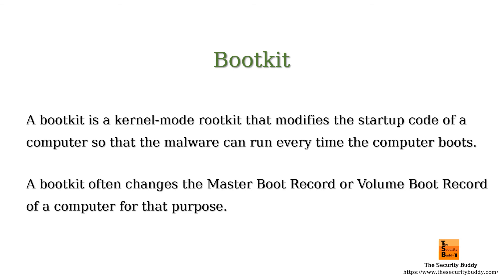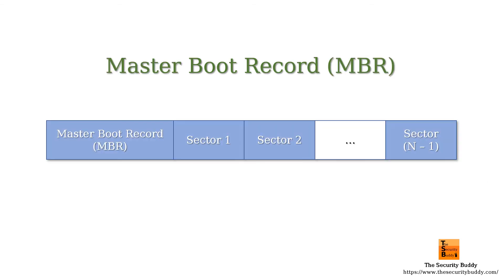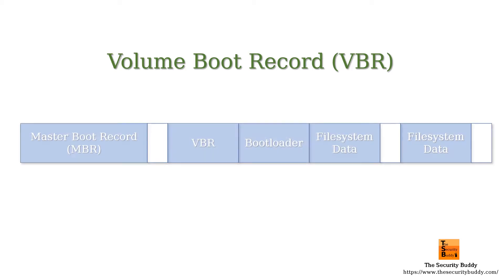A master boot record, or MBR, is a particular type of boot sector that holds information on how the logical partitions are organized on the system. A volume boot record, or VBR, is a type of boot sector that contains machine code to initiate the boot process. The VBR is the first sector in a data storage device and it is invoked directly by the machine's firmware or indirectly by the master boot record.